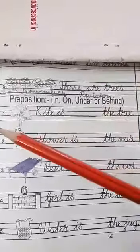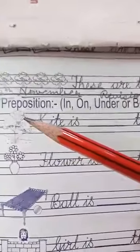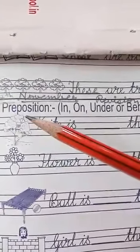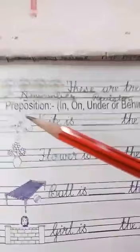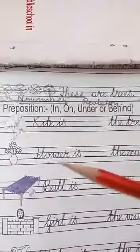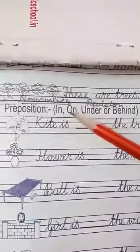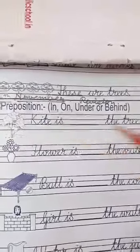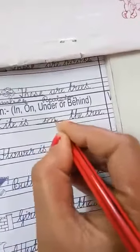So look here number 1. Kite is dash the tree. Are you looking at this? Where is kite? That is the kite. Where is kite? Kite is on the tree. Kite कहाँ है? Kite tree के ऊपर है. तो आपको पता हैं ना, ऊपर के लिए क्या यूज़ करते हैं? ऊपर के लिए हम on का यूज़ करते हैं. O-N, on. So what will you do here? We will write on here. We use on.